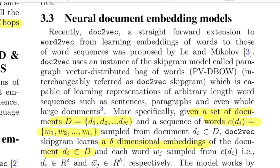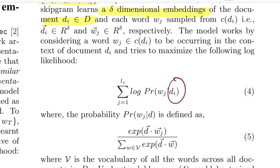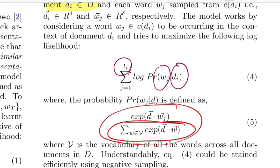Under a skip-gram scheme, the model tries to maximize: given a document d, what words occur in the document? You want to maximize the log probability for that, where L_i is the number of words sampled from the document. This conditional probability is expressed as a softmax function where the denominator sums over the entire vocabulary — all words across all documents. The softmax outputs a distribution between 0 and 1, incurring a higher loss if a word is predicted as likely but doesn't actually belong to the document.